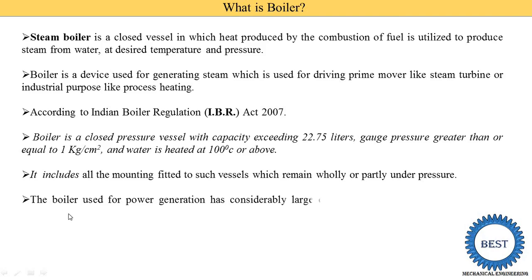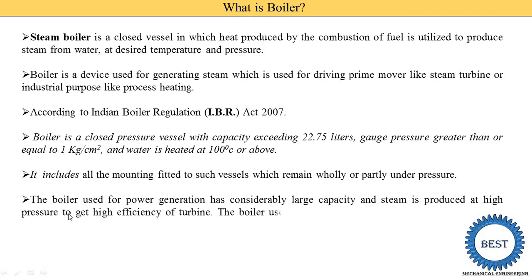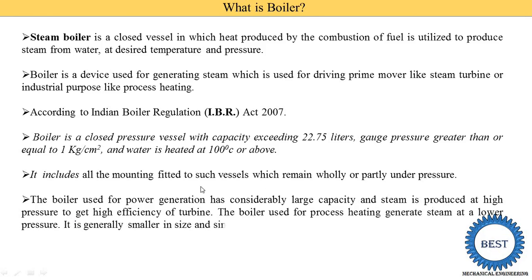Boilers used for power generation are of considerably large capacity, and steam is produced at high pressure to get high efficiency of the turbine. The boiler is also used for process heating to generate steam at lower pressure, and it is generally smaller in size and simpler in design.